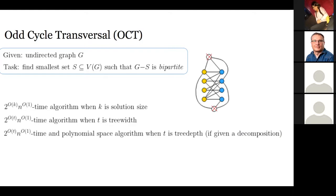These parametrizations are comparable: tree width is always upper bounded by tree depth, but it is sometimes more convenient to consider tree depth because it can lead to polynomial space computation. On the other hand, solution size and tree width are incomparable — one can construct a graph with small tree width but large solution size, and vice versa.